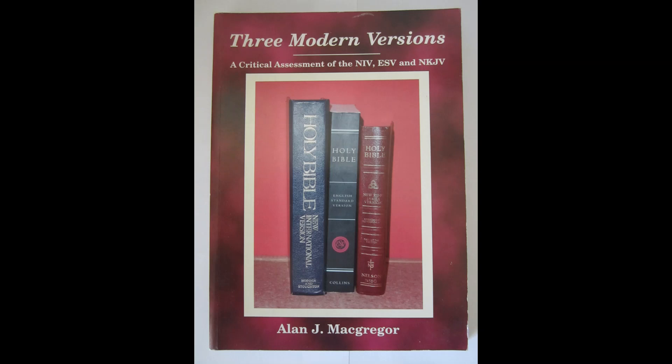Greetings, this is Jeff Riddle from Christ Reformed Baptist Church in Louisa, Virginia. This is an audio version of a book review that I have written. The book under review is by Alan J. McGregor, titled Three Modern Versions, subtitled A Critical Assessment of the NIV, ESV, and NKJV. It was published by the Bible League in 2004 and is 126 pages in length. This book review first appeared in the Reformed Baptist Trumpet, Volume 2, Number 1, in 2011, and can be found on pages 15 through 19.